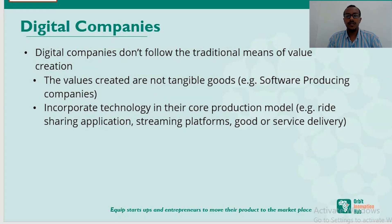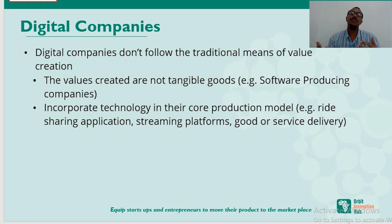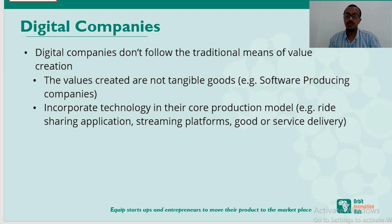Digital companies don't necessarily follow the traditional routes that production companies do. A software company or streaming platform doesn't produce tangible goods — they produce software and content, which they distribute to clients. Their inbound logistics, operations, and outbound logistics are all different. They need to find a strategic method to minimize costs and maximize profits in a structured manner, since the values created are not tangible and technology is incorporated into core production.